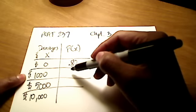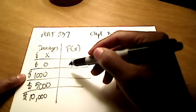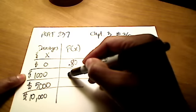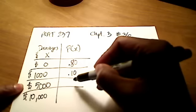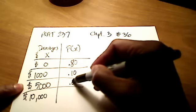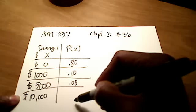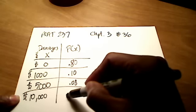Let's see. The probability of an accident where $1,000 worth of damages occurs, I think the book uses 10%. For $5,000, it uses 8%. And for $10,000, it used 2%.